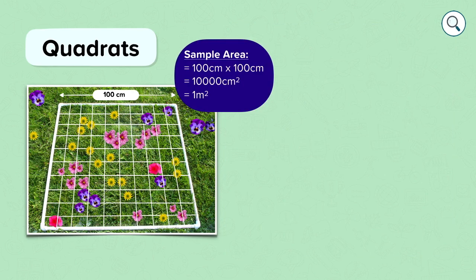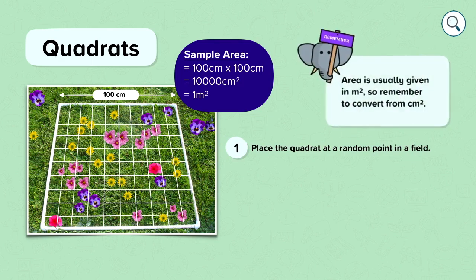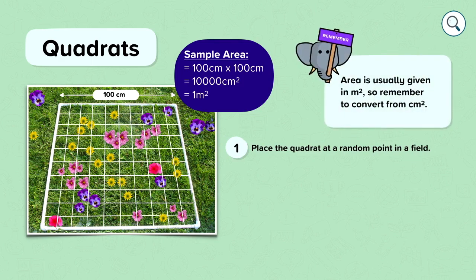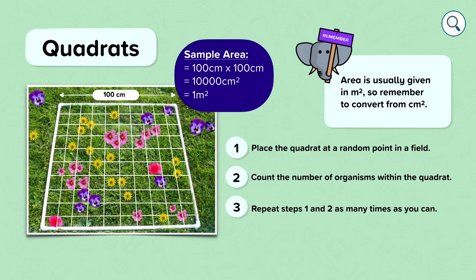Your sample area is one meter squared. That's because each side is usually a hundred centimeters by a hundred centimeters. Some quadrats come in different sizes but the most common is one meter squared. To take a measurement with a quadrat you place the quadrat at a random point in the field. The area is normally given in meters squared so remember to convert from centimeters if needed. Count the number of organisms within the quadrat, repeat steps one and two as many times as you can, and calculate the mean number of organisms per meter squared.